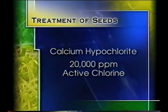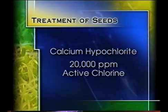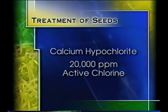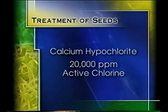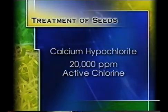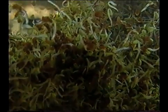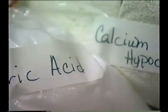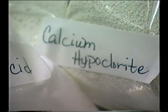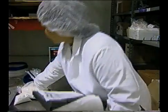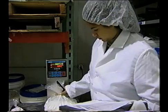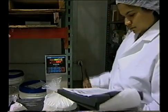Treatment of seeds in a solution of calcium hypochlorite prepared to contain 20,000 parts per million (ppm) of active chlorine is recommended. Calcium hypochlorite is specified rather than sodium hypochlorite or domestic bleach because it doesn't significantly reduce permanent germination for most seed types. In recent outbreaks of illness associated with alfalfa sprouts, none of the sprouters could document the use of 20,000 ppm of chlorine to treat seeds. Calcium hypochlorite is the only chemical treatment currently approved by the EPA for disinfecting seeds intended for sprouts at concentrations that can significantly reduce the level of pathogens on seeds.